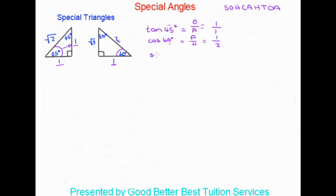For the last basic example, we have sin 30 degrees. Remember, sine is opposite over hypotenuse. Going to the 30-degree angle in the right-hand triangle, the opposite side is one and the hypotenuse is two, so sin 30 equals one over two.